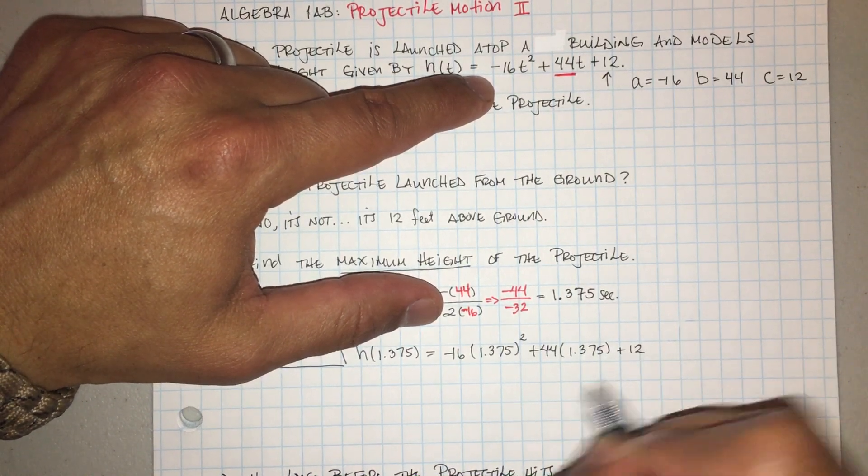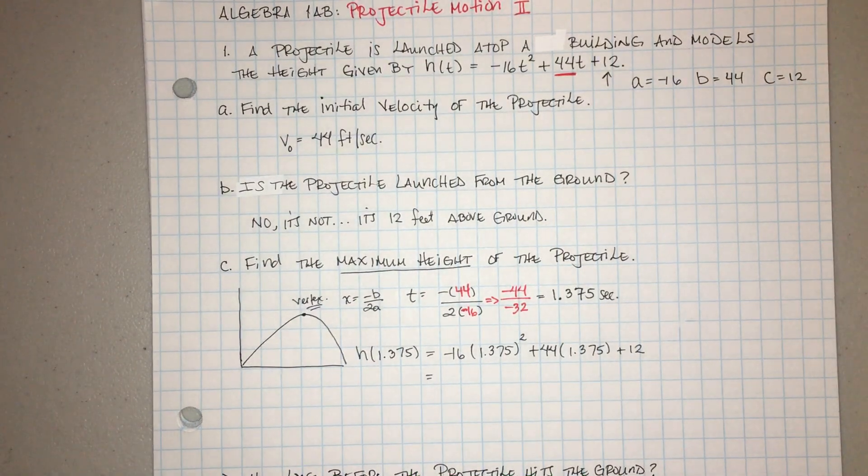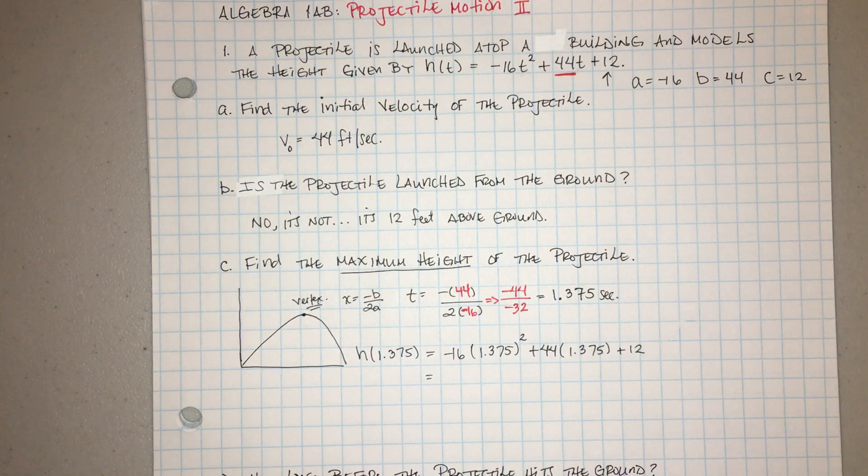Then I would just go ahead and put that all in my calculator. Entonces nomás voy a poner todo eso en mi calculadora. So let's go ahead and do that. Negative 16, 1.375 to the second power, poder de dos, and plus, más cuarenta y cuatro, 1.375.